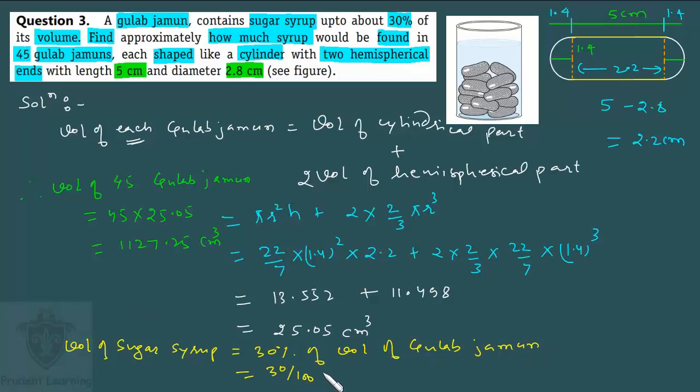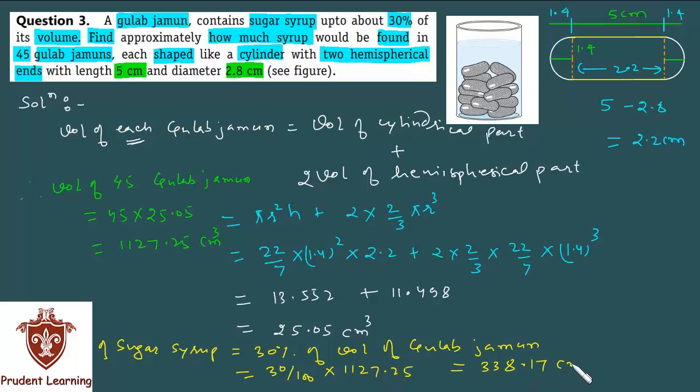Meaning 30 percent, that is 30/100, times volume of Gulab Jamun which is 1127.25. And if you solve this, you'll get 338.17 cm³.